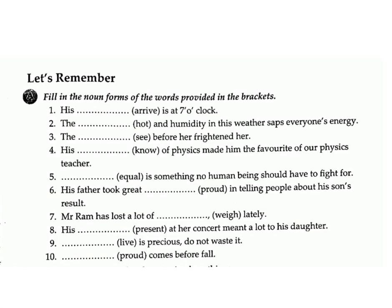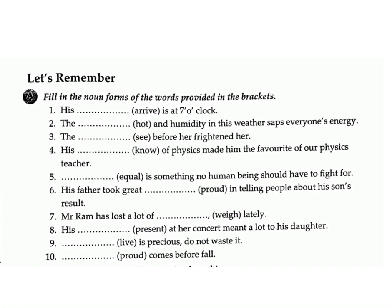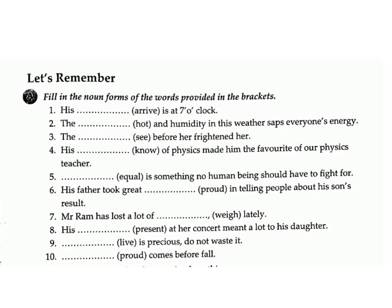Let's remember — fill in the noun forms of the words provided in brackets: 1. His ___ (arrive) is at seven o'clock — answer: arrival. 2. The ___ (hot) and humidity in this weather saps everyone's energy — answer: heat. 3. The ___ (see) before her frightened her — answer: sight. 4. His ___ (know) of physics made him the favorite of our physics teacher — answer: knowledge. 5. ___ (equal) is something no human being should have to fight for — answer: equality. 6. His father took great ___ (proud) in telling people about his son's result — answer: pride.